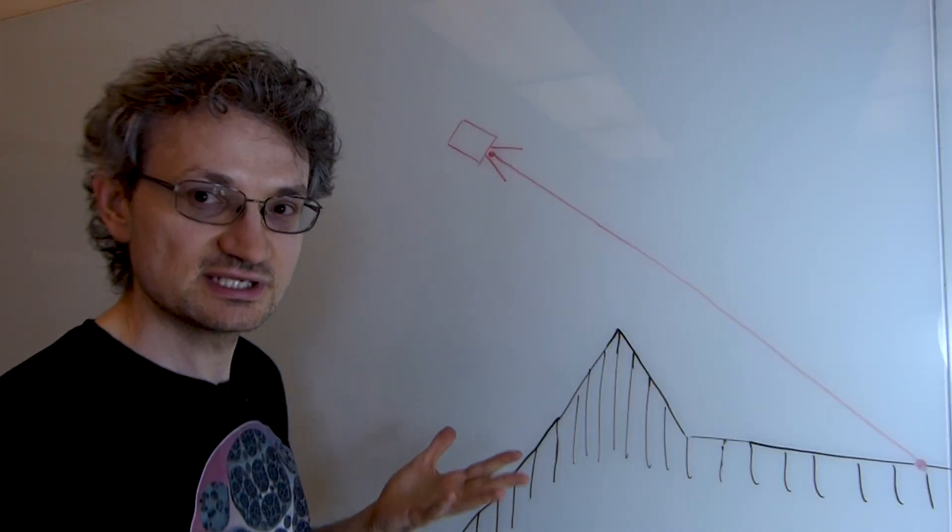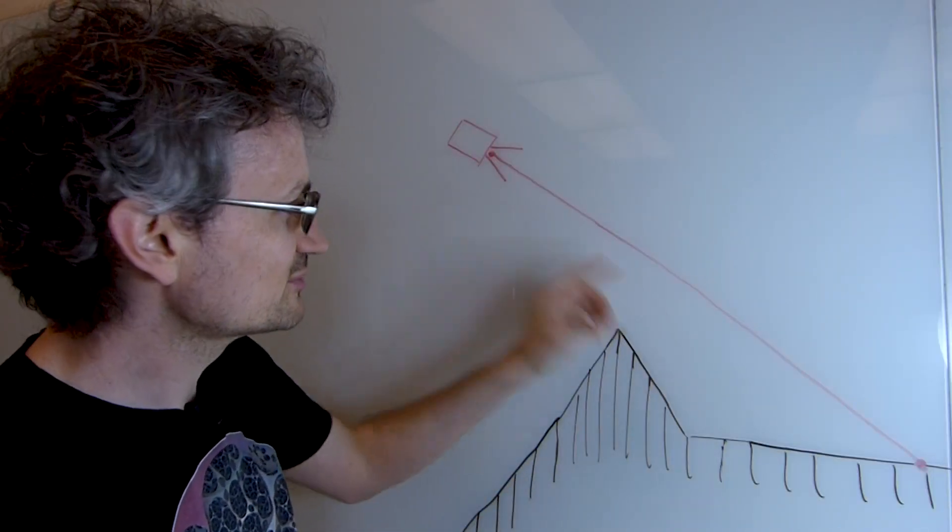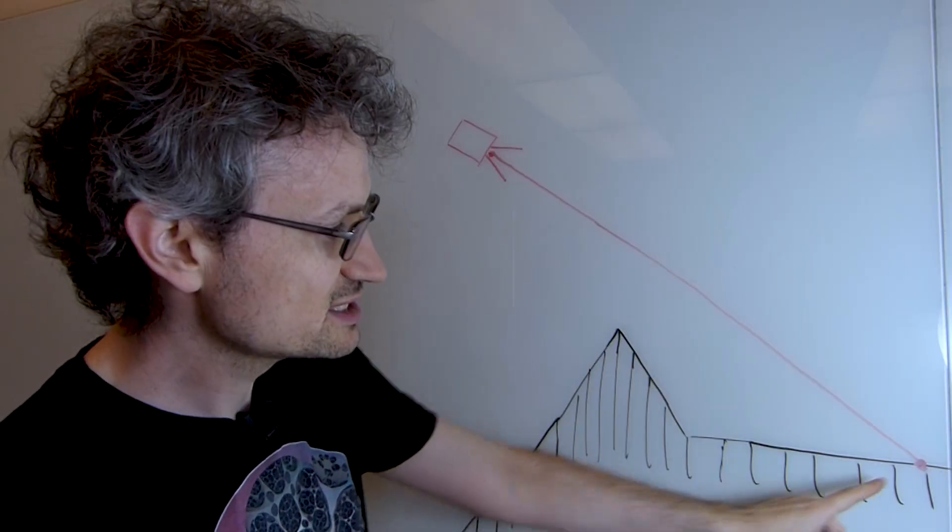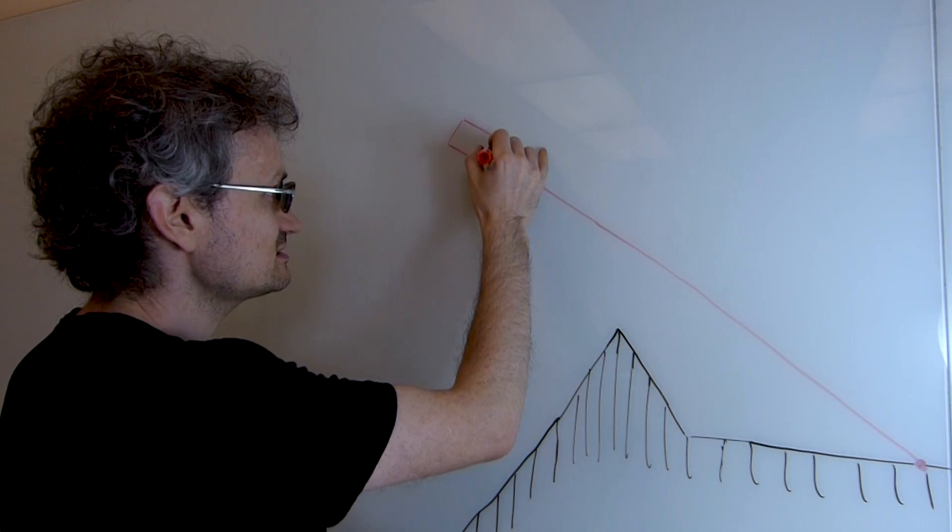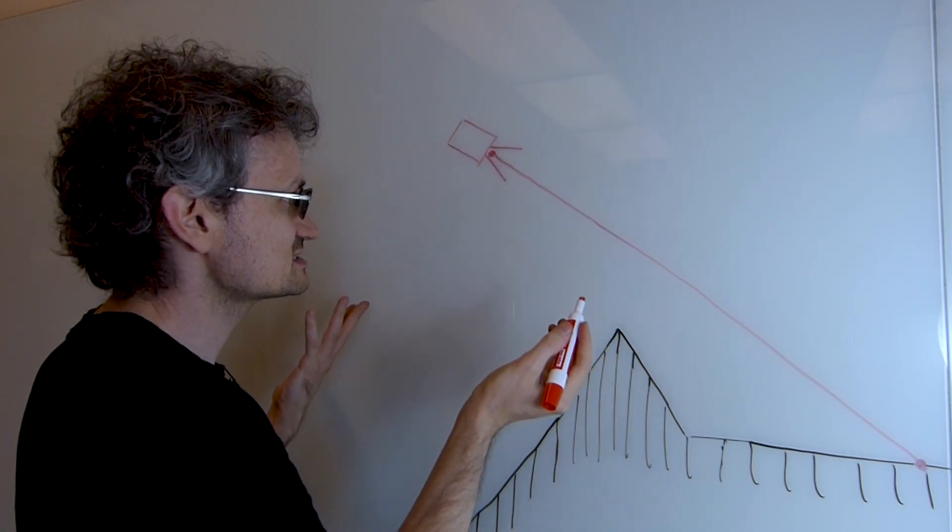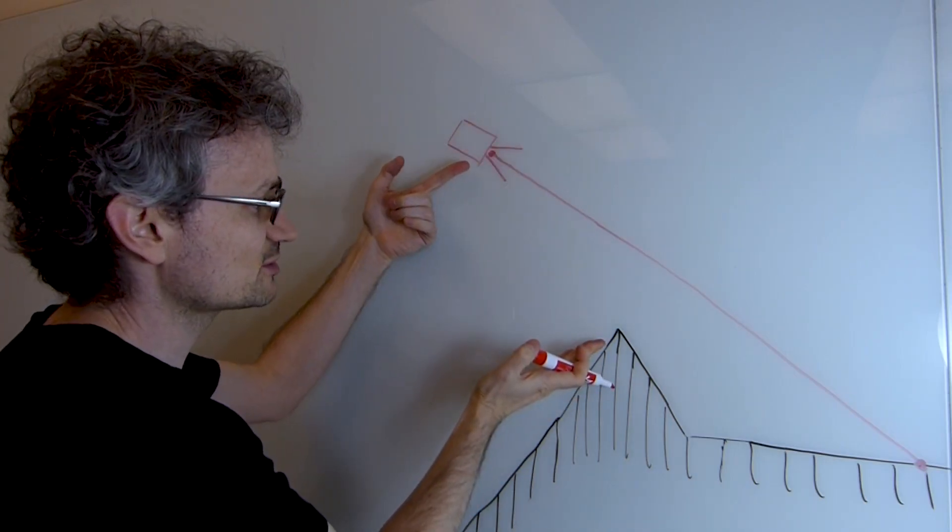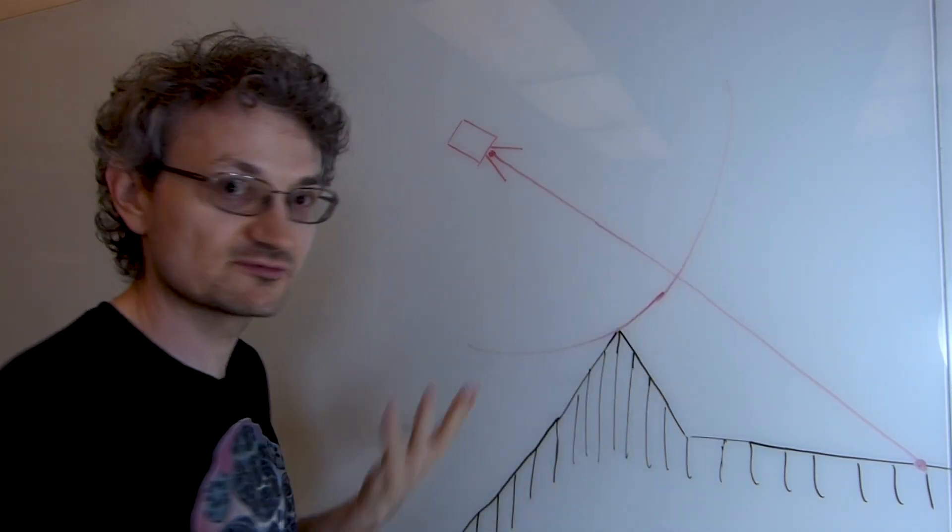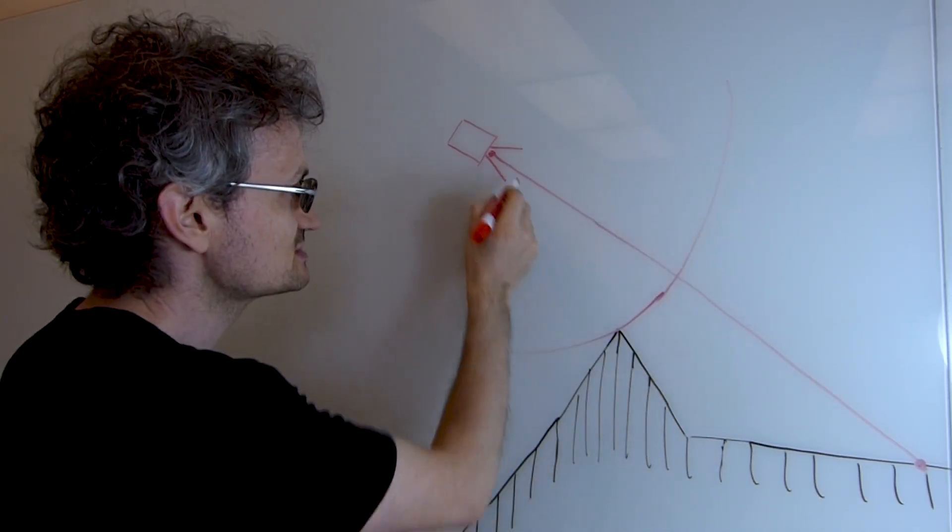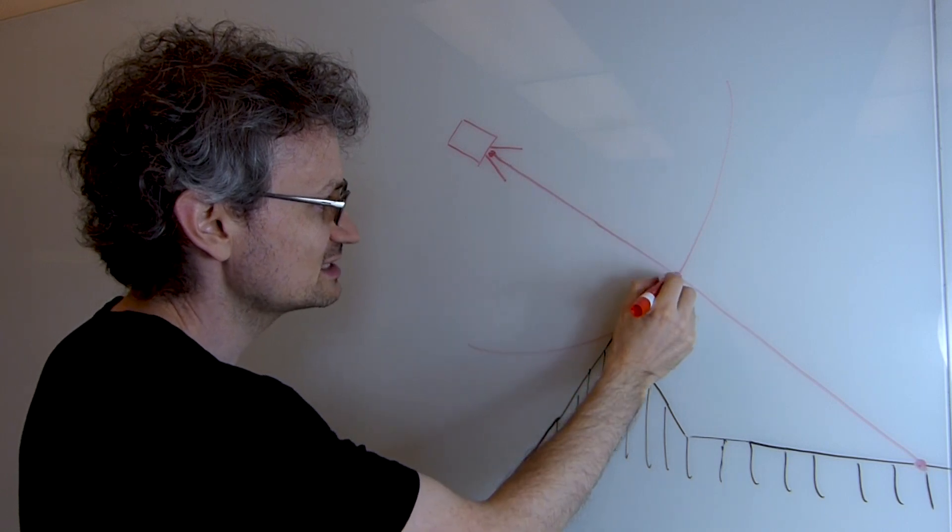For each pixel on the screen, we cast a ray from a virtual camera out into the world to see what object it hits and therefore what color the pixel should be. We start at the virtual camera and we ask the signed distance function how far away from the objects in the world are we, and it tells us we are this far away from any object in the world, which means we can safely march along the ray to this point.